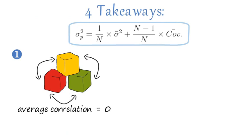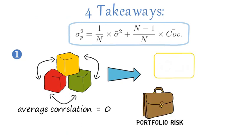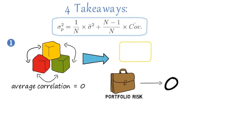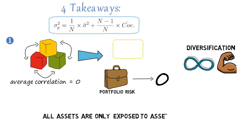That last expression allows us to extract four takeaways about the power and the causation of diversification. First, if the average correlation among the assets is zero, the covariance bar term vanishes, and portfolio risk converges to zero as we increase the number of assets in the portfolio. Said differently, the power of diversification is indeed limitless if asset returns are on average uncorrelated. Such a setup would arise if all assets are only exposed to asset-specific risk.